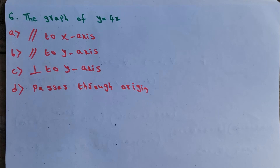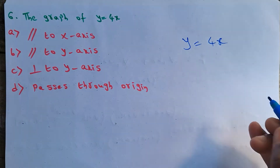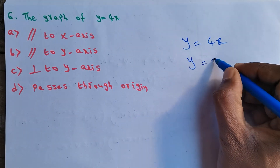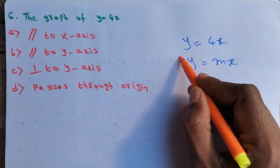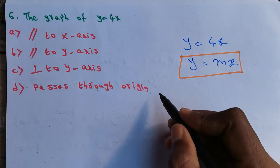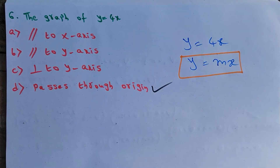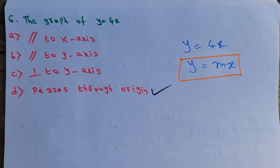Question 6: The graph of y = 4x. y = 4x is in the form y = mx. If an equation is in the form y = mx, it always passes through the origin. So y = 4x passes through the origin.